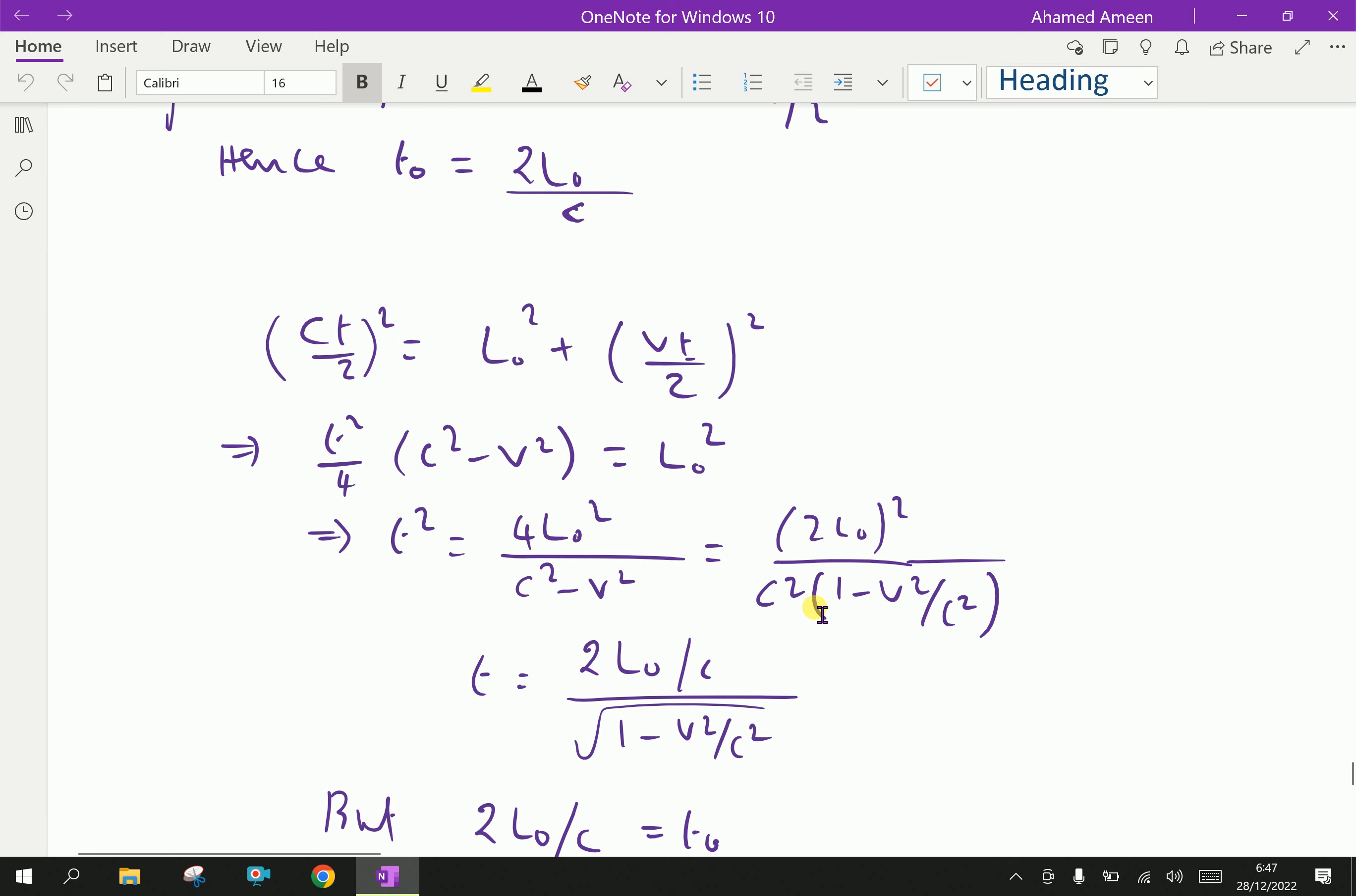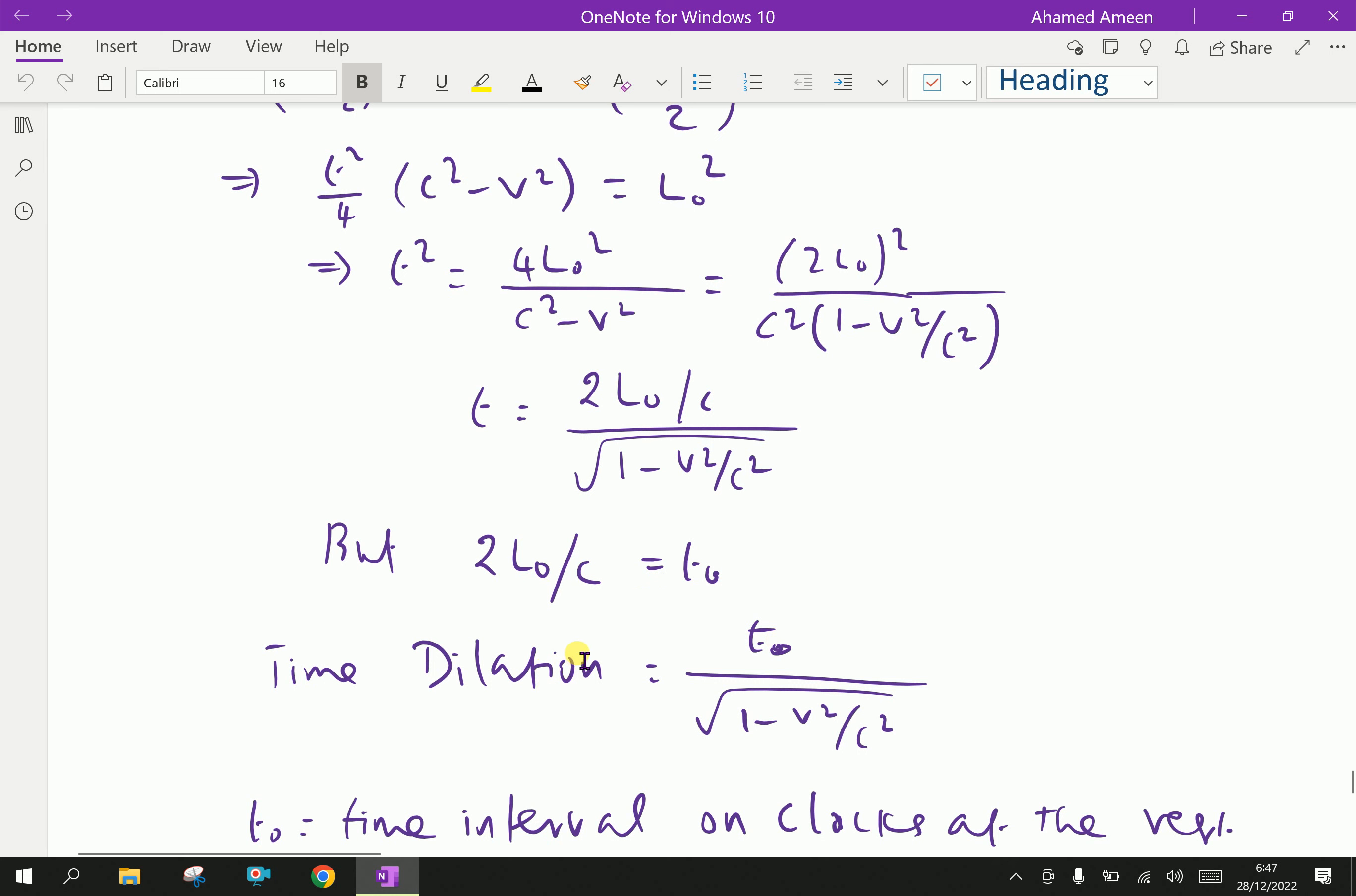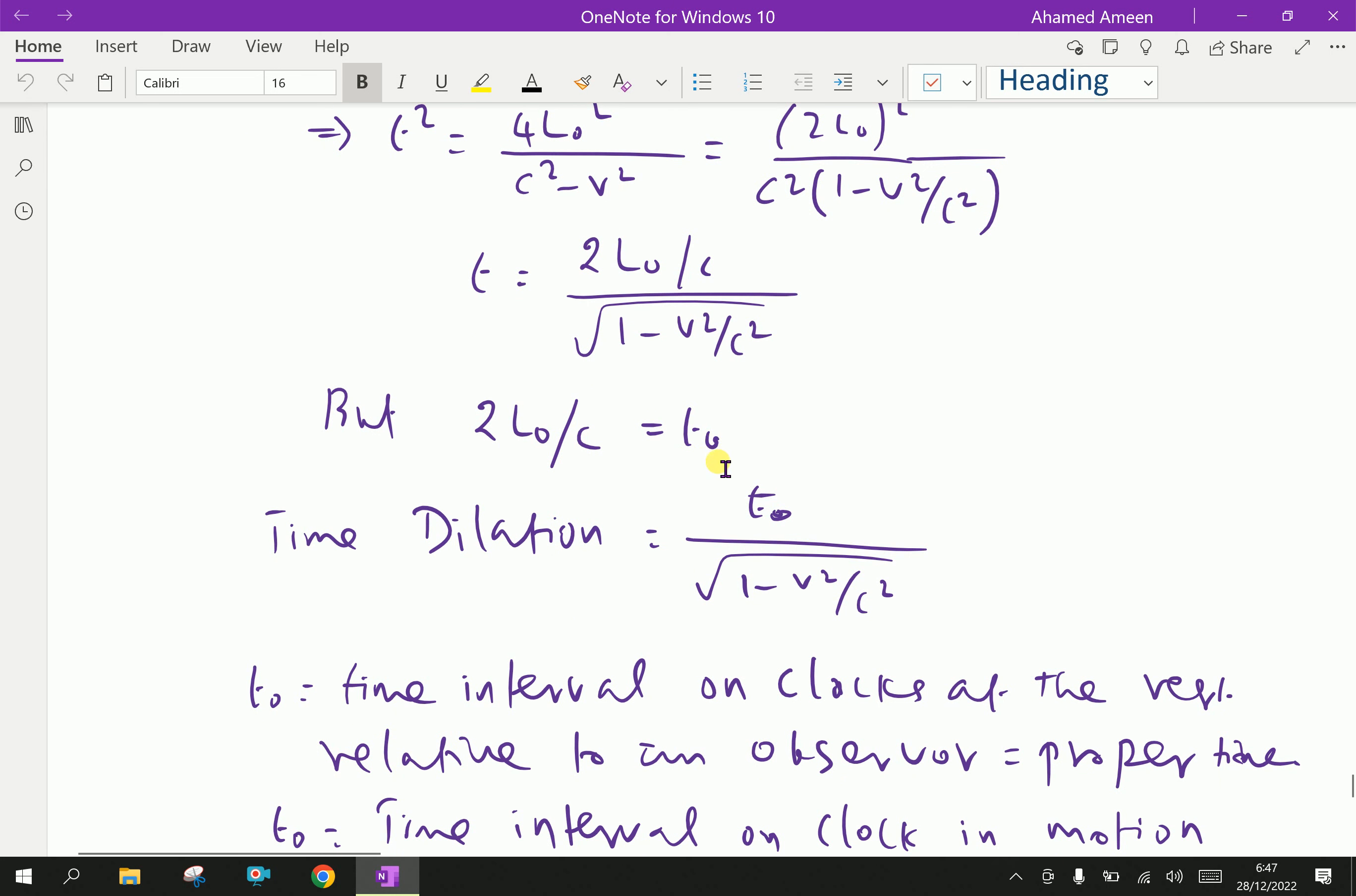Then, from this, we can get T by using square root. The square root means here, 2 L zero square by C. Because, this square root, and this is here, square root. Therefore, T equal to L zero by C over 1 minus V square by C square. But 2 L zero over C equal to T zero, initial time. Then, there is a proper time in the frame not moving there. Here, the body is not moving. This time is T zero. Now, time dilation is T zero over square root of 1 minus V square by C square. This is the important formula for time dilation.